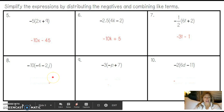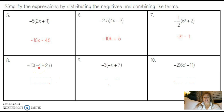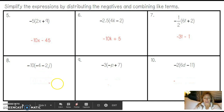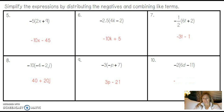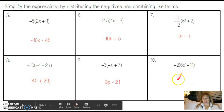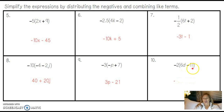See if you can try this one before I start talking. This is negative 4, so my answer terms will be positive. 10 times 4 is 40 — it should be positive. 2 times 10 is 20; because it was a subtraction it becomes plus. That gives 40 plus 20j. Pause the video and try the next one on your own. The answer should be positive 3p minus 21. For number 10, the first term is positive so it ends up negative, the second is negative so it becomes positive — the answer is negative 12d plus 22.